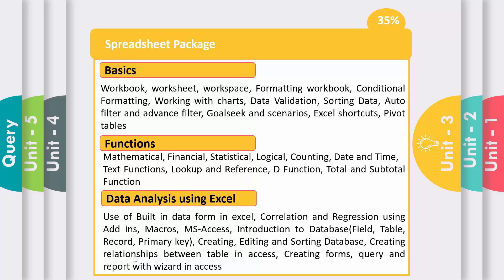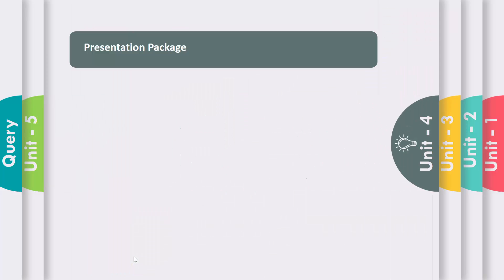MS Access is also important. The most important units are Unit 2 and Unit 3 — Unit 2 has 25% weightage and Unit 3 has 35% weightage, so both units are most important. Now let me discuss the next unit — Unit Number 4: Presentation Package, which has only 10% weightage.